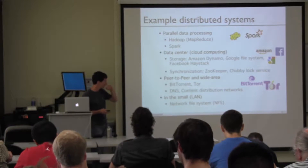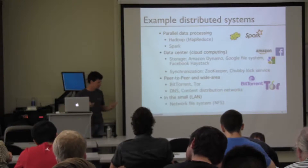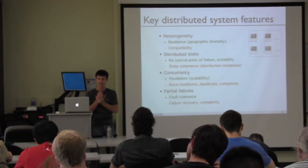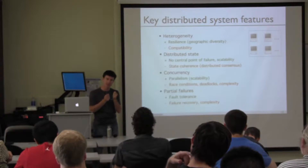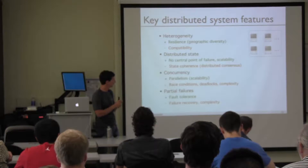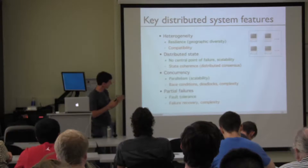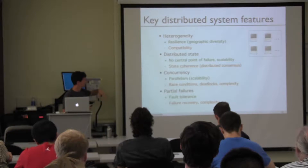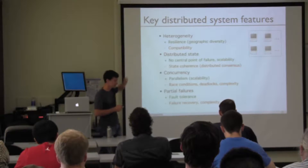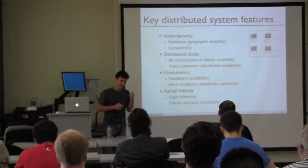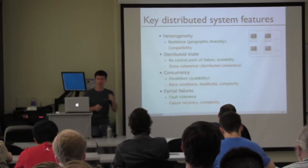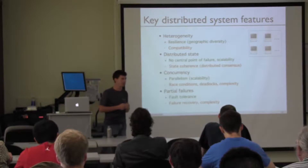One way to think about the span of these systems is along four dimensions. I took a stab at figuring out what is different about distributed systems, and I think it has to do with four key features. For each one, I'll give a plus — the feature you gain — and a drawback — the challenge you face as you build the system.